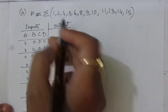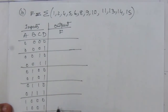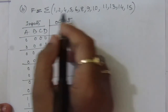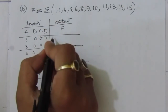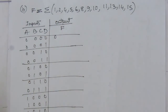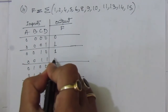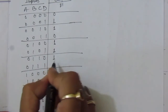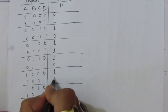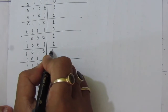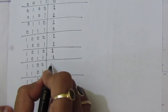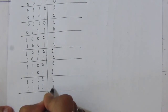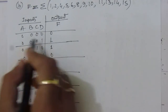For each minterm number present in the expression, the output F is 1; otherwise 0. Minterm 0 is absent so F = 0. Minterms 1 and 2 are present so F = 1. Minterm 3 is absent. Minterms 4, 5, 6 are present. Minterm 7 is absent. Minterms 8, 9, 10, 11 are present. Minterm 12 is absent. Minterms 13, 14, and 15 are present.